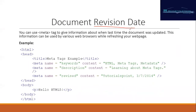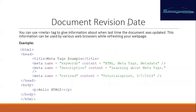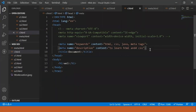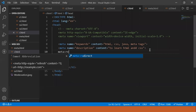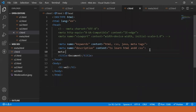Moving to the next metadata — revision data. This is used for refreshing your webpage. It indicates when this website was made or revised. We write meta with name 'revise', then provide the content with a page name and date.